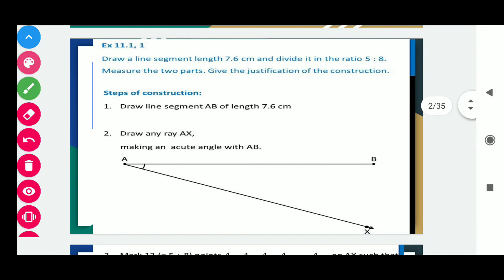We have question number 1. Draw a line segment of length 7.6 cm, divide it in the ratio 5 ratio 8, and measure the two parts. Give the justification of the construction.